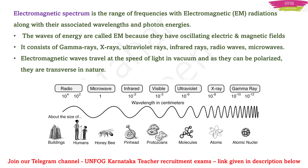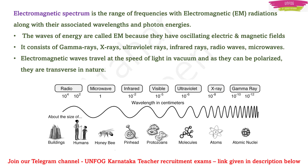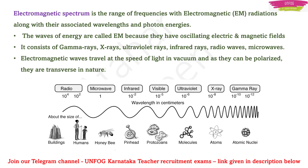X-rays have a wavelength of 10⁻⁸ centimeters, which is around the size of an atom. And gamma rays have wavelengths ranging from 10⁻¹⁰ to 10⁻¹² centimeters, which is about the size of atomic nuclei.